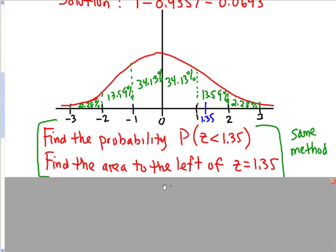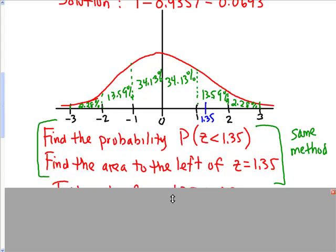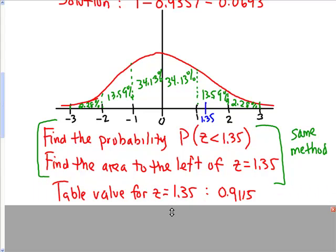So the way we did this before is we went into our table, and we would just accept the value. So the table value for z equals 1.35 is 0.9115, and we just take that answer. We don't have to do anything with it when we use the table.